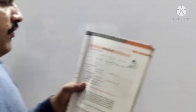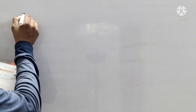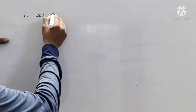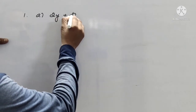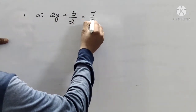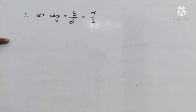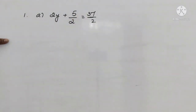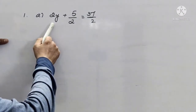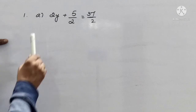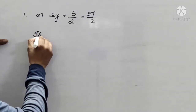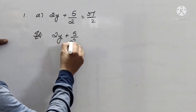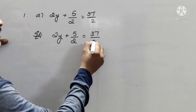Now, coming to exercise 4.3. The first question is: solve the following equations. The first question is 2y plus 5 by 2 equals to 37 by 2. We have to solve for the value of y.